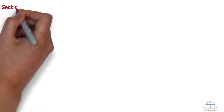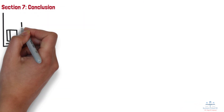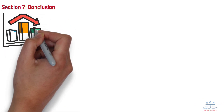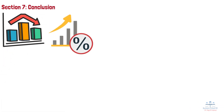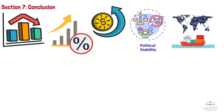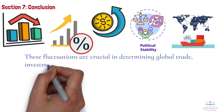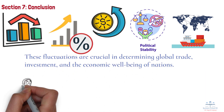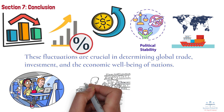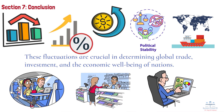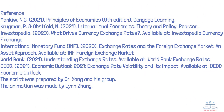Section 7: Conclusion. To wrap up, currency values fluctuate based on a variety of factors, including interest rates, inflation, political stability, and trade dynamics. These fluctuations are crucial in determining global trade, investment, and the economic well-being of nations. Whether you're traveling abroad, buying imported goods, or investing, currency movements play a pivotal role in shaping our financial decisions. If you found this video helpful, don't forget to like, subscribe, and stay tuned for more insights into economics and finance. Thanks for watching, and I'll see you next time.